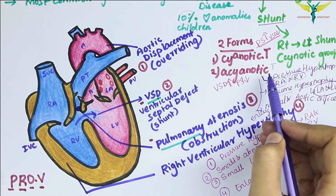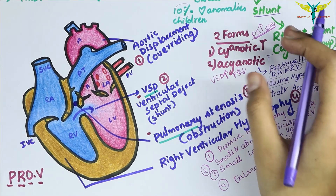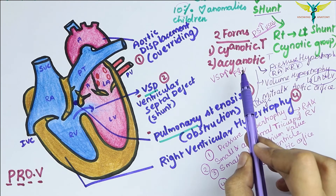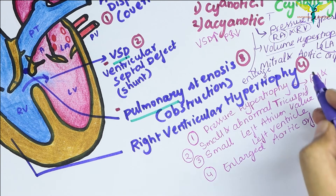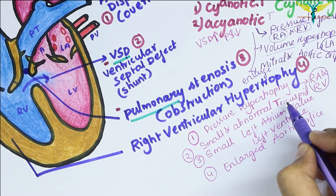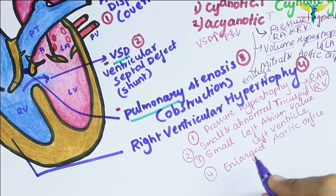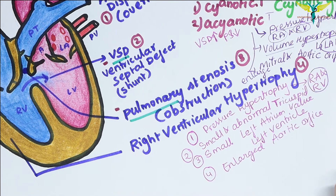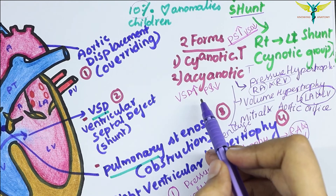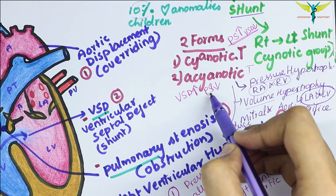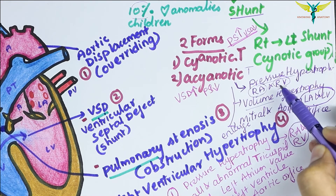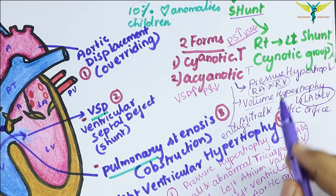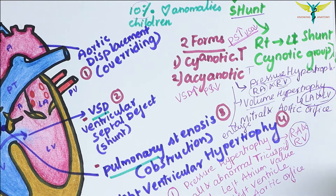There are two forms: cyanotic tetralogy, which presents with cyanosis, and acyanotic tetralogy, which does not. The cyanotic form produces pressure hypertrophy of the right atrium and right ventricle, an abnormal tricuspid valve, small left atrium and left ventricle, and an enlarged aortic orifice. The acyanotic type shows pressure hypertrophy of the right atrium and right ventricle, volume hypertrophy of the left atrium and left ventricle, and enlargement of the mitral and aortic orifices.